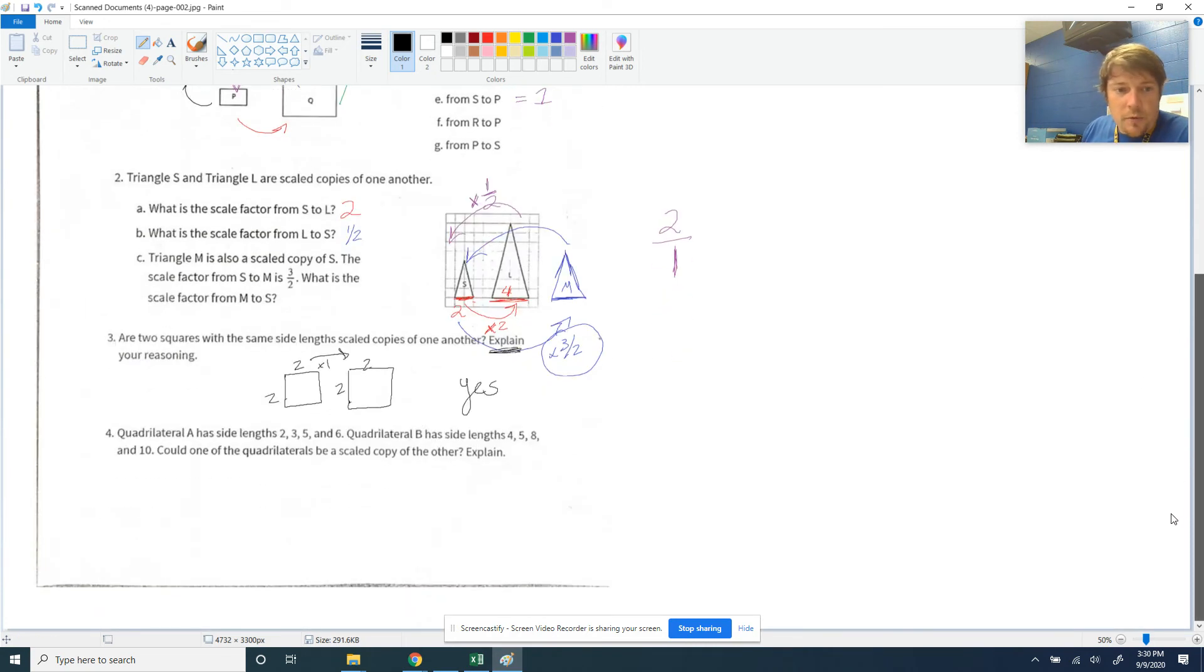And then number four, we have quadrilateral. Make sure you put something there. Don't just write yes if you want full credit. Quadrilateral A has side lengths of 2, 3, 5, and 6. And quadrilateral B has side lengths of 4, 5, 8, and 10. So A's side correspond this way.